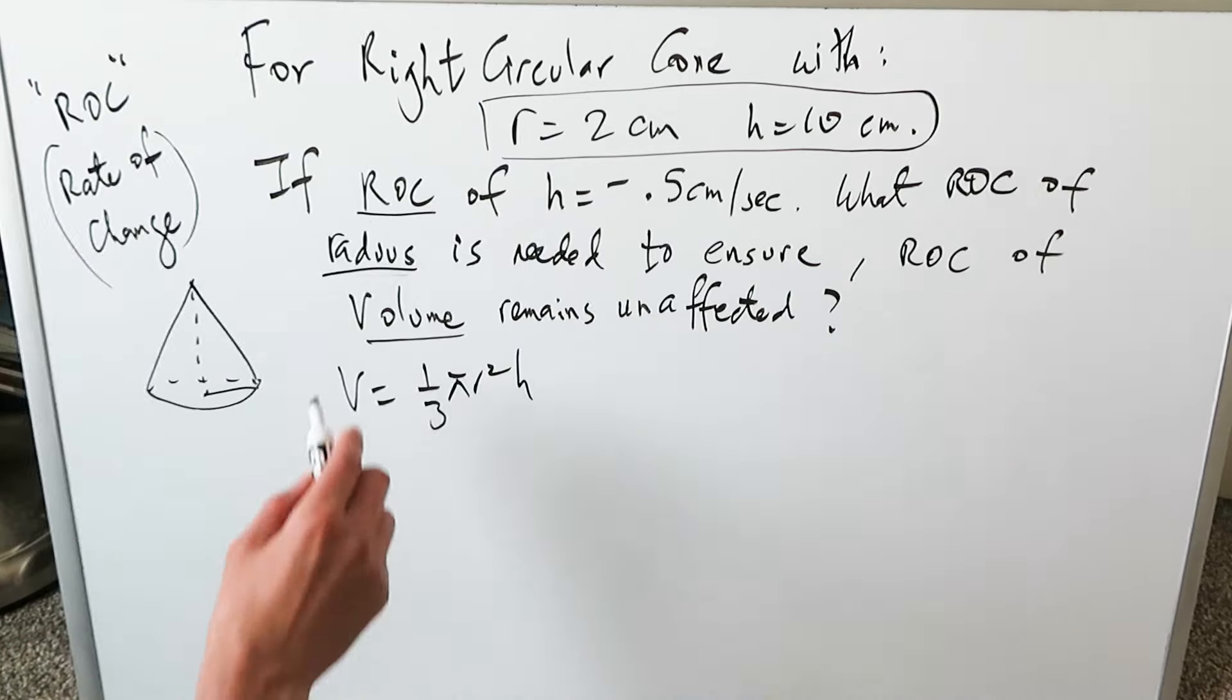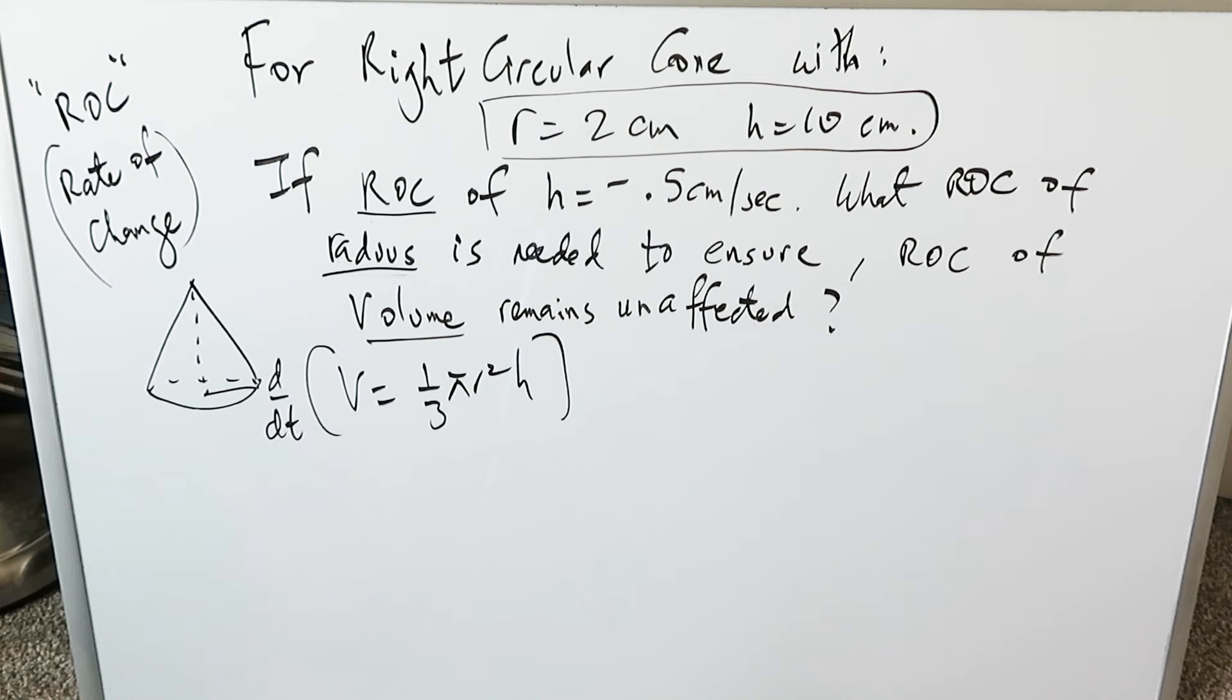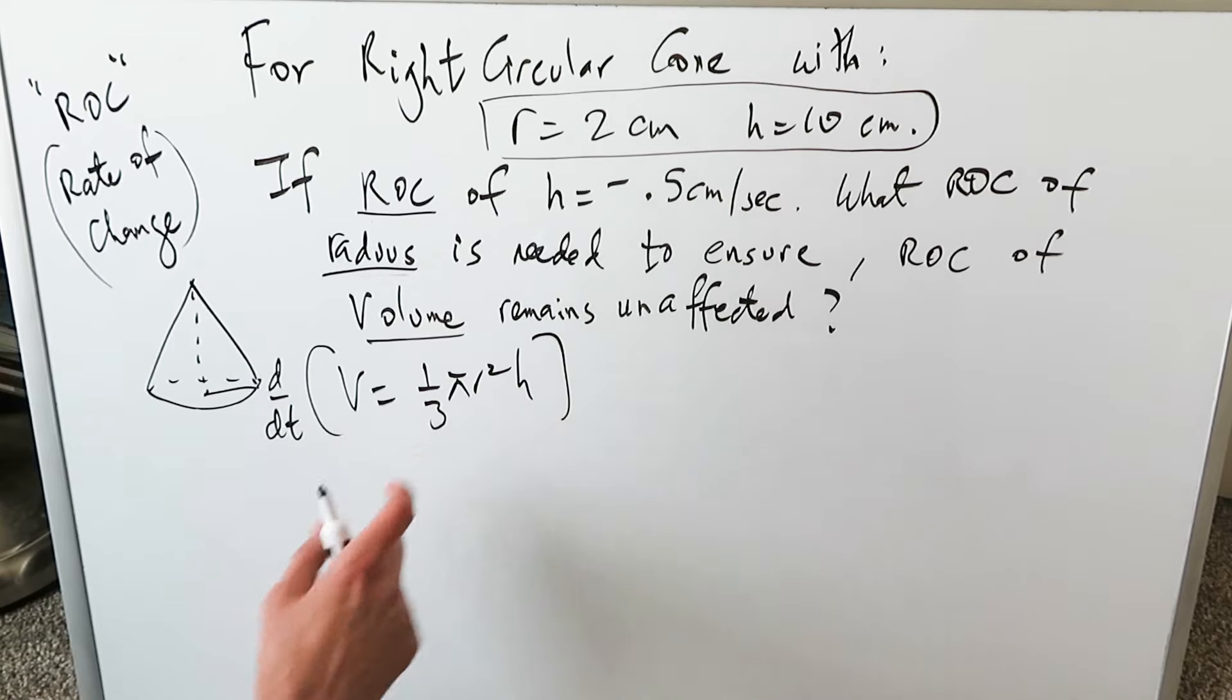You have the formula here. When you're doing rate of change problems, you should basically be thinking about applying a derivative to your expression and understanding what your variables and what your constants are. π over 3 is a constant. Volume is a variable. Radius is a variable. Height is a variable.